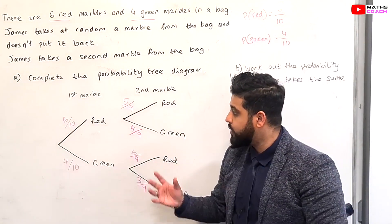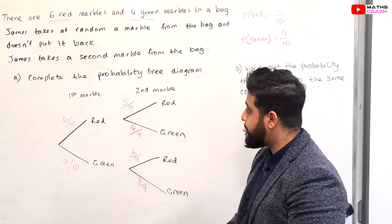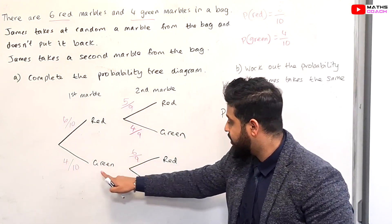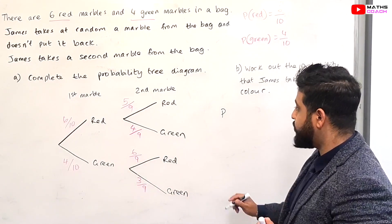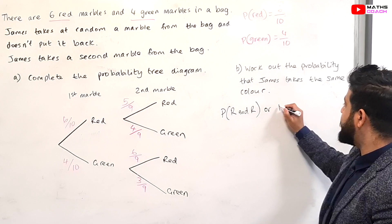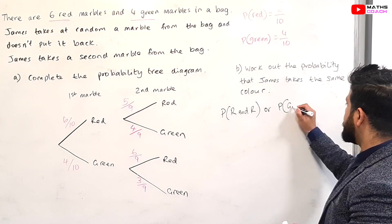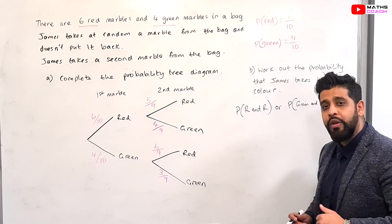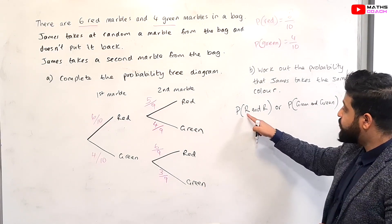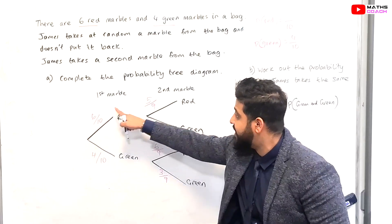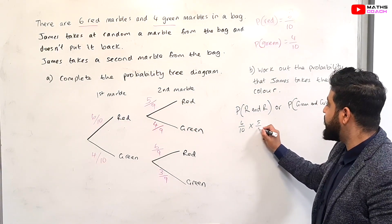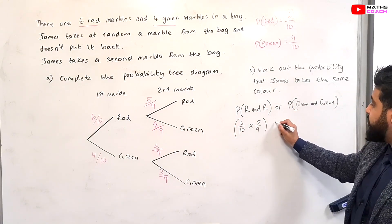Let's look at our tree diagram. We want the probability where James selects the same colour. We can have the probability of a red and a red, or we can have a green and a green. In probability, 'and' means multiply and 'or' means add. So we're looking for: P(red and red) = 6/10 × 5/9, plus P(green and green). That's the probability of red and red — and 'or' represents a plus.